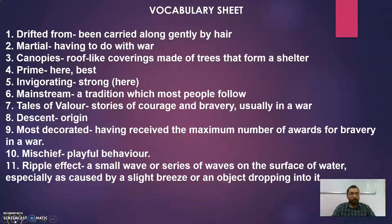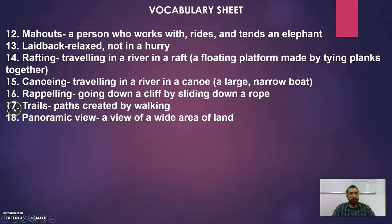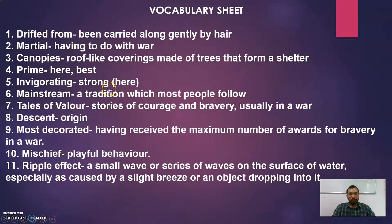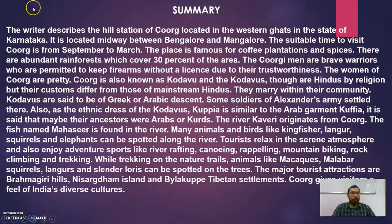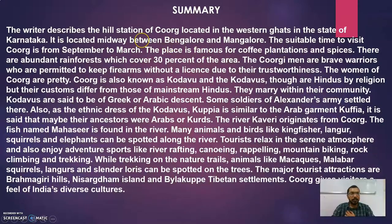The vocabulary sheet for Part Two is divided into two slides with eleven words in the first slide and the remaining in the second. Please pause and copy these word meanings in your notebook. In the summary, the writer describes the hill station of Coorg located in the Western Ghats in Karnataka, midway between Bangalore and Mangalore. The best time to visit is from September to March. The place is famous for coffee plantations, spices, and abundant rainforests covering thirty percent of the area.